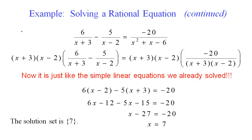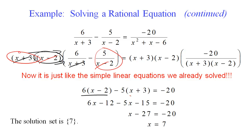When we multiply each piece by (x+3)(x−2), terms cancel on each fraction, leaving simple expressions, and the right-hand side becomes negative 20. We distribute — being careful not to miss that we are distributing a minus 5 — combine like terms, isolate the variable, and there is our solution. We would plug it back in to verify.